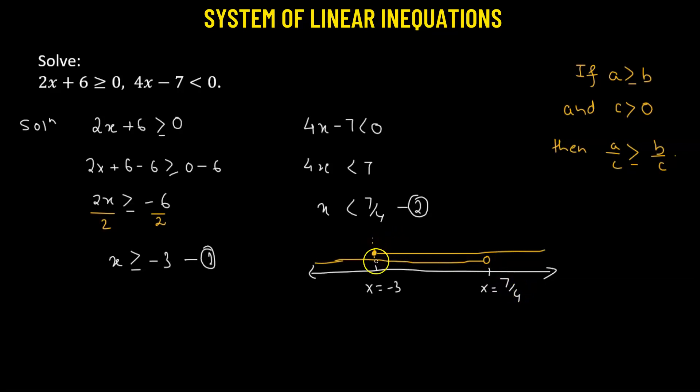Now when we look at our number line, we see our common region, that this is the region where both of the x greater than negative 3 and x less than 7 over 4 have a common solution.